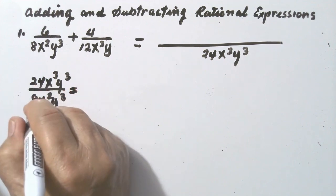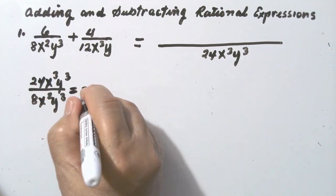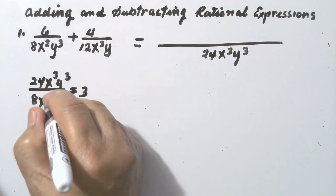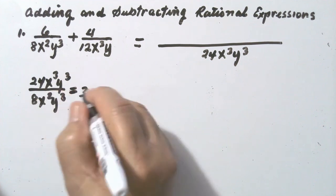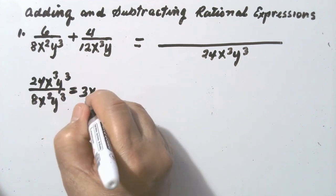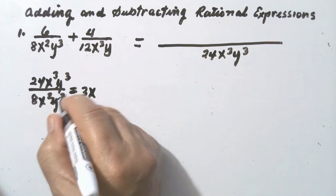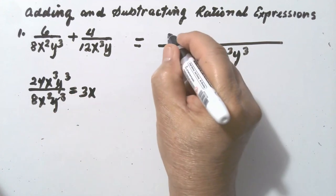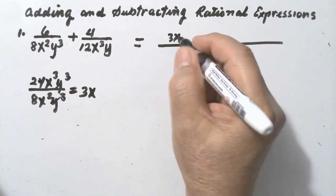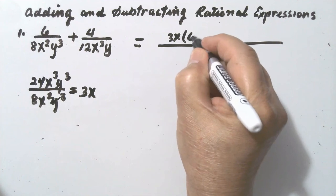24 divided by 8 is 3. And then the exponent: 3 minus 2 is 1, so we have only x. The y cubed cancels out. So we get 3x, and multiply by the numerator 6: that gives 3x times 6.